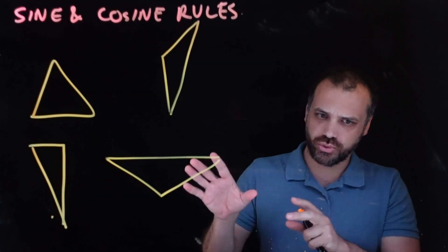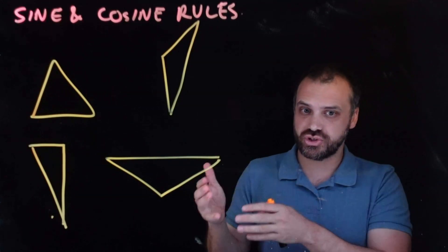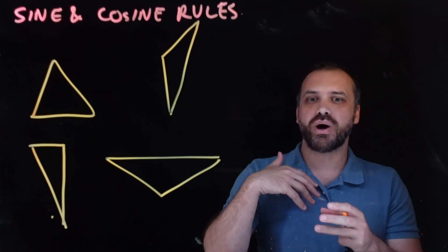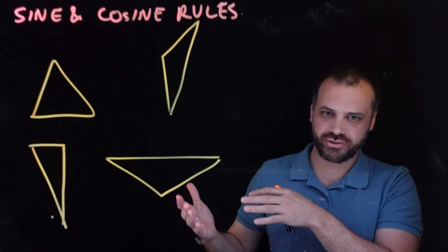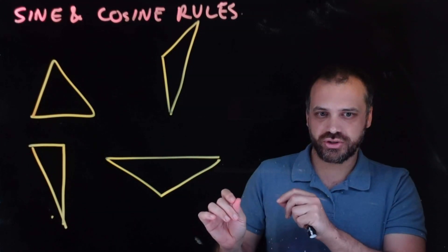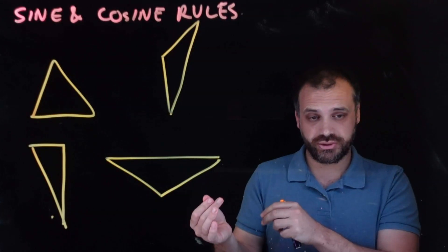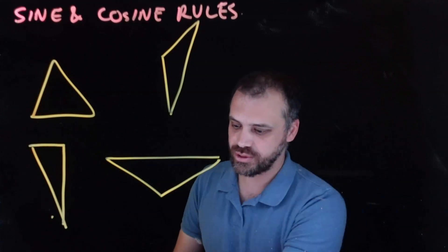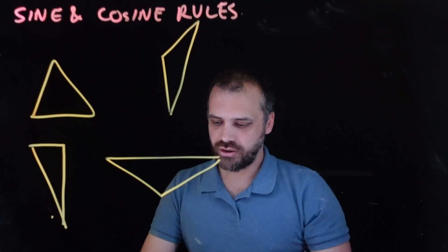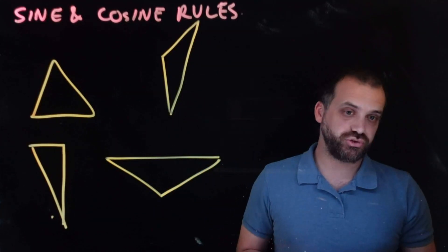One thing we do want to talk about before we get started on the sine and cosine rules is a way of labeling the angles and the sides of a triangle. When it comes to the sine and cosine rules, we need to be able to talk about the angles and we need to be able to talk about the sides. And we need to be able to name them in order to do that. So how are we going to label up a triangle?